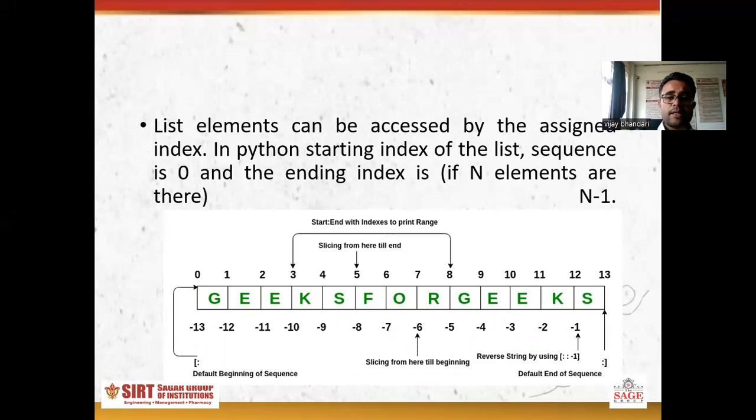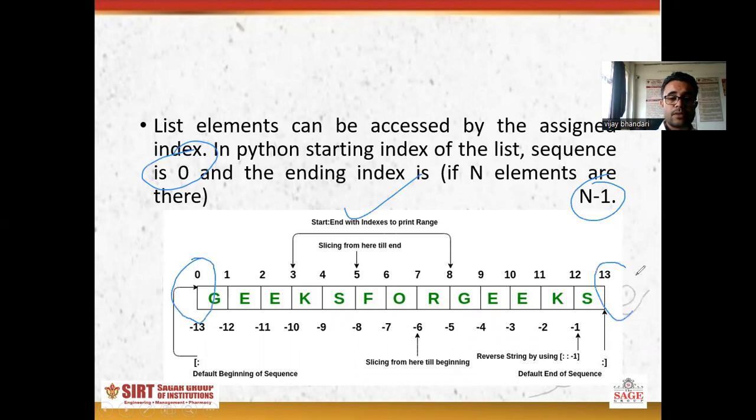The list elements can be accessed by the assigned index. In Python, starting index of the list sequence is 0 and the ending index is, if N elements are there, minus 1. So here you can see it can be started as 0 and last element is minus 1. So starting point will be this and ending point will be this.